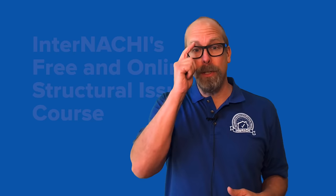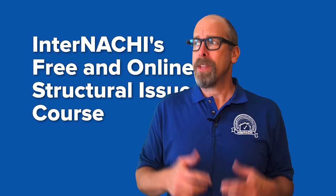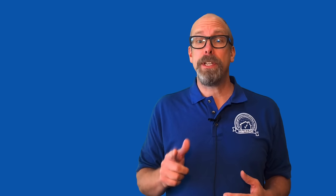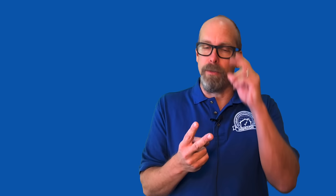We can refer to table R301.7 in the IRC. We can also take InterNACHI's free online structural issues course for home inspectors to calculate deflection of a joist. As an example, for any 14-foot joist, the deflection limit is about a half an inch. That's 168 divided by 360, approximately.